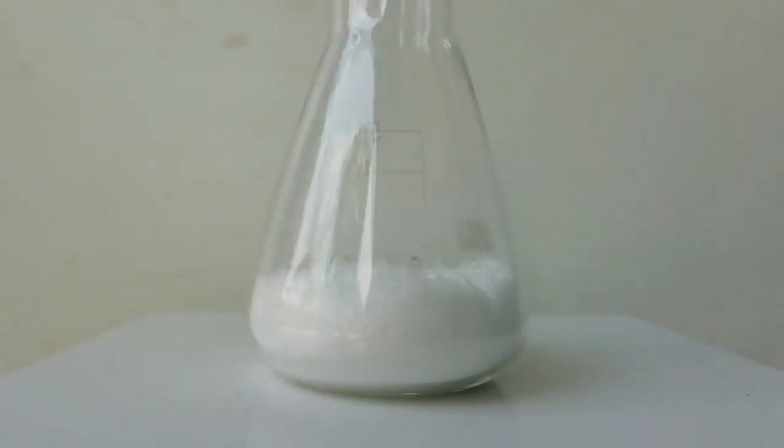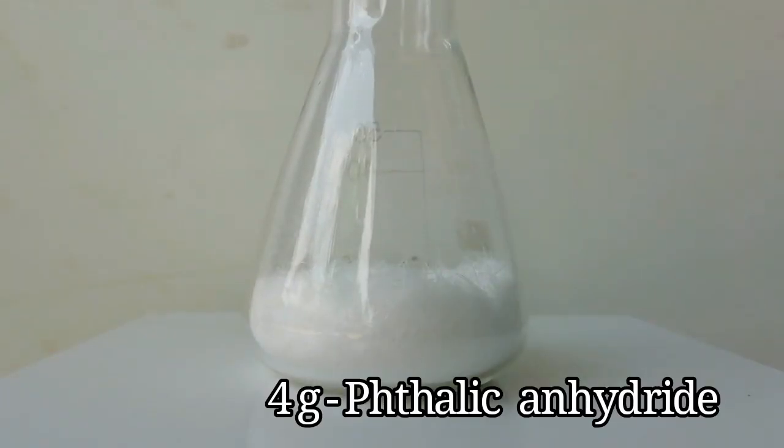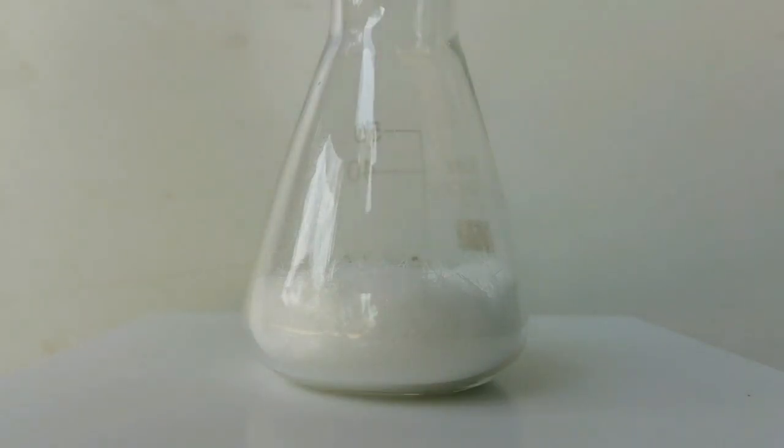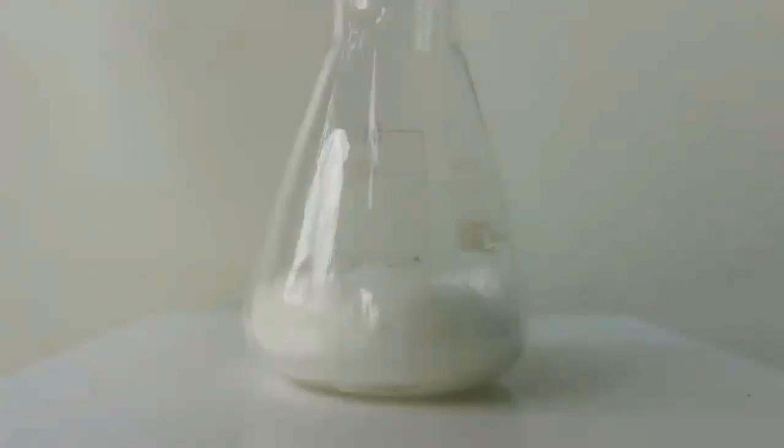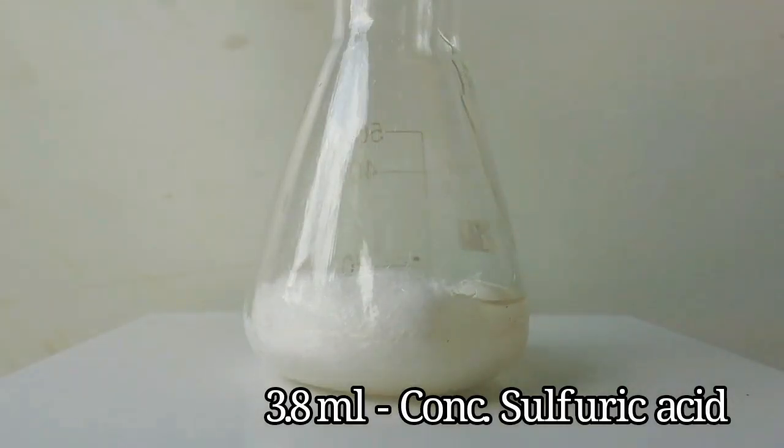First, 4 grams of phthalic anhydride was placed in a 50 ml flask. 3.8 ml of concentrated nitric acid and 3.8 ml of concentrated sulfuric acid were added and mixed well.